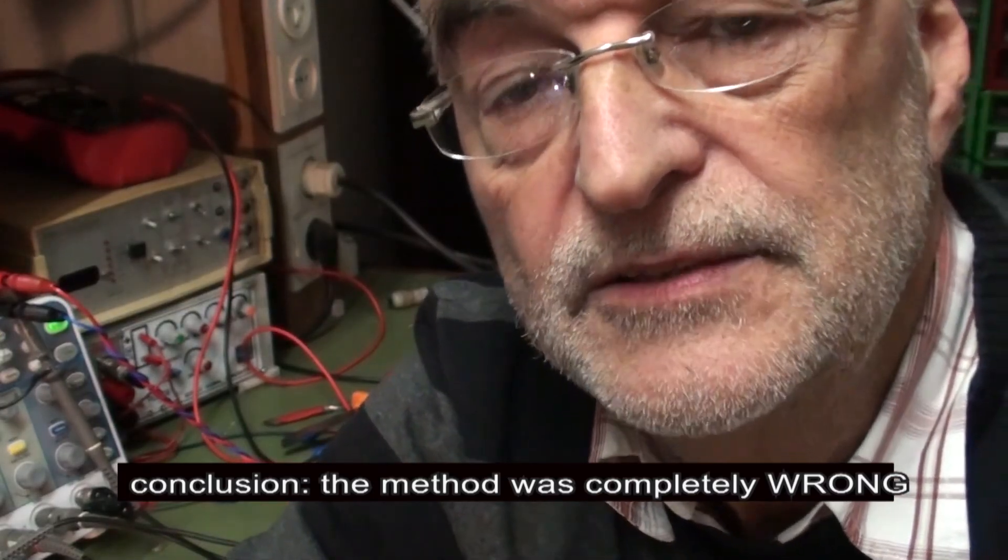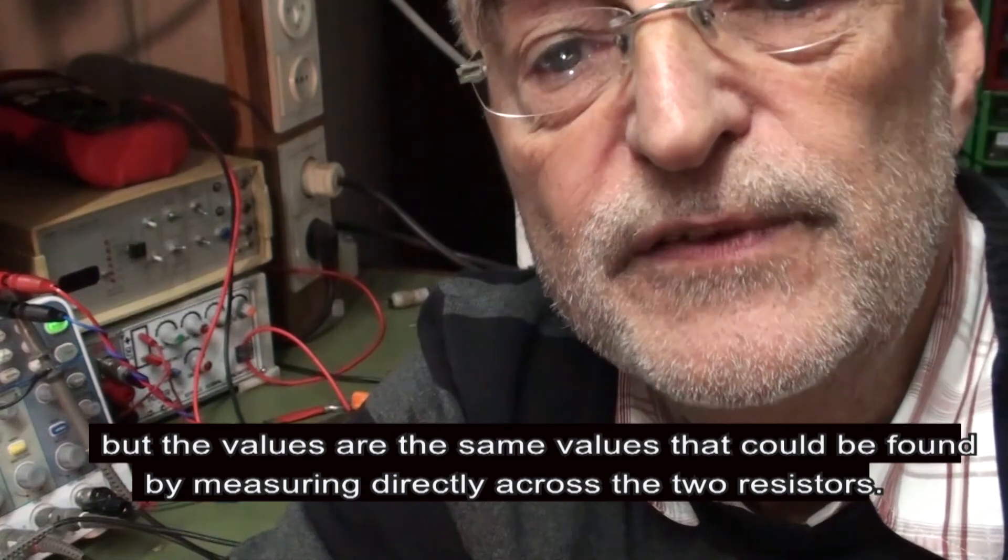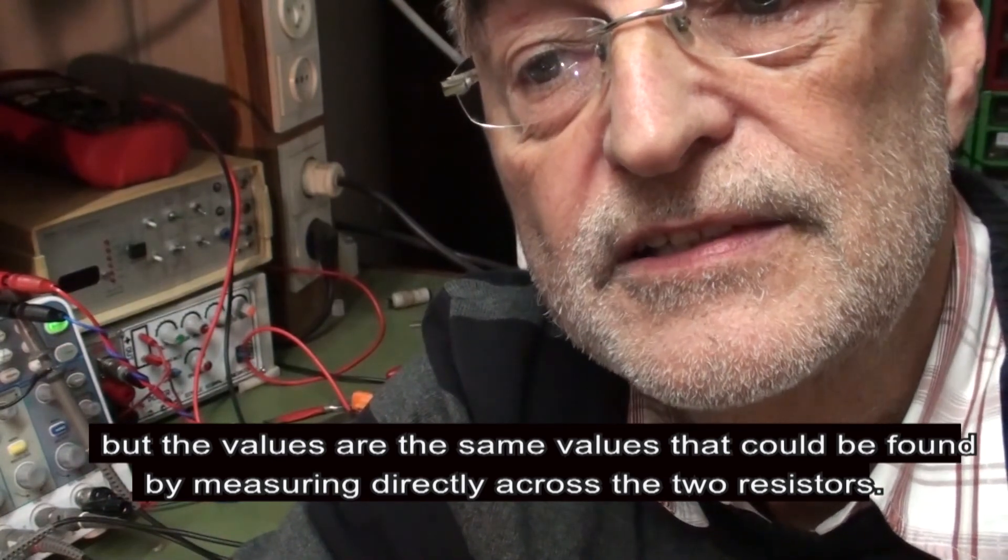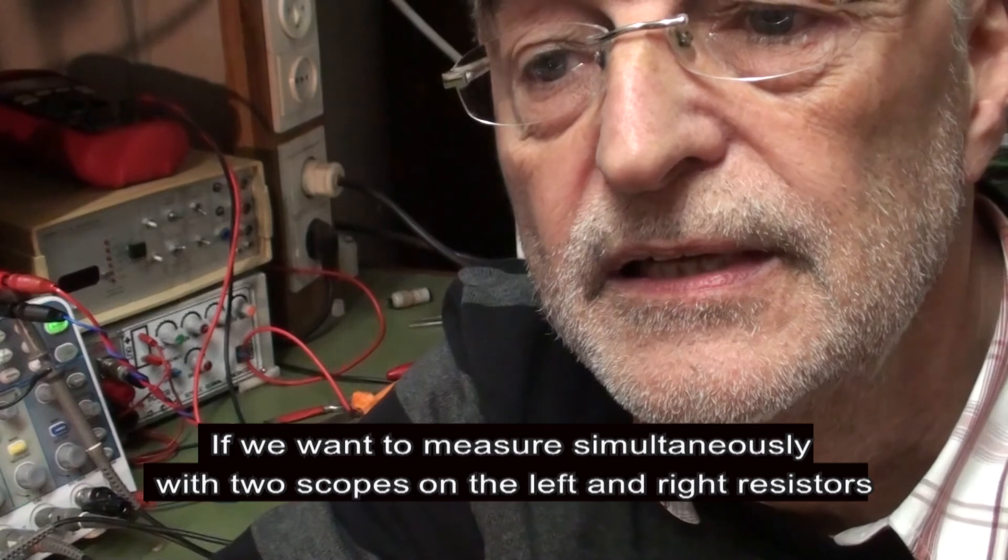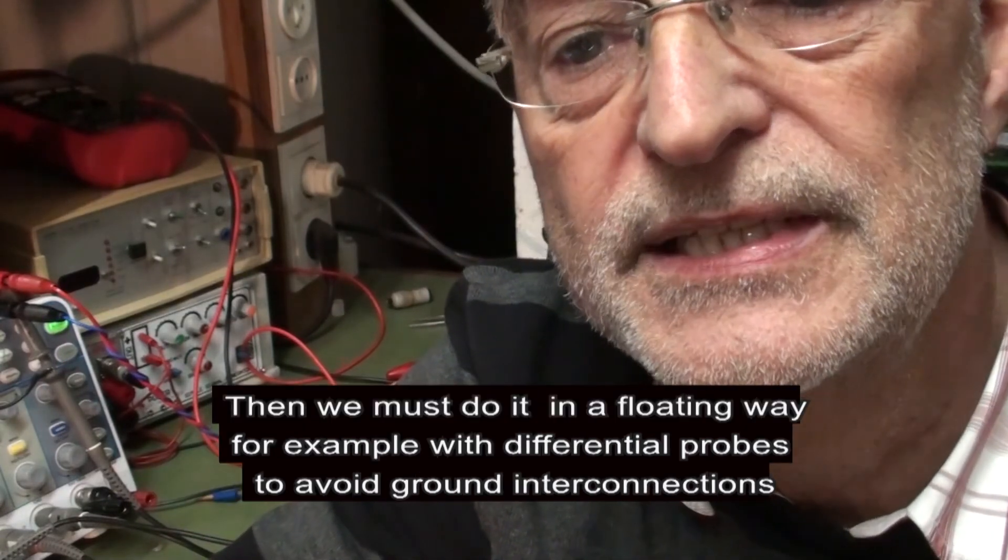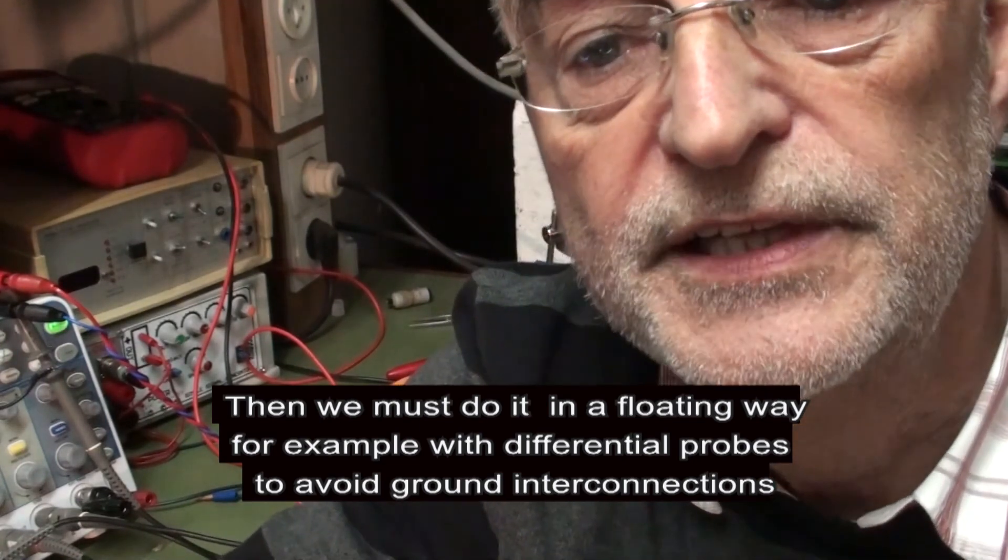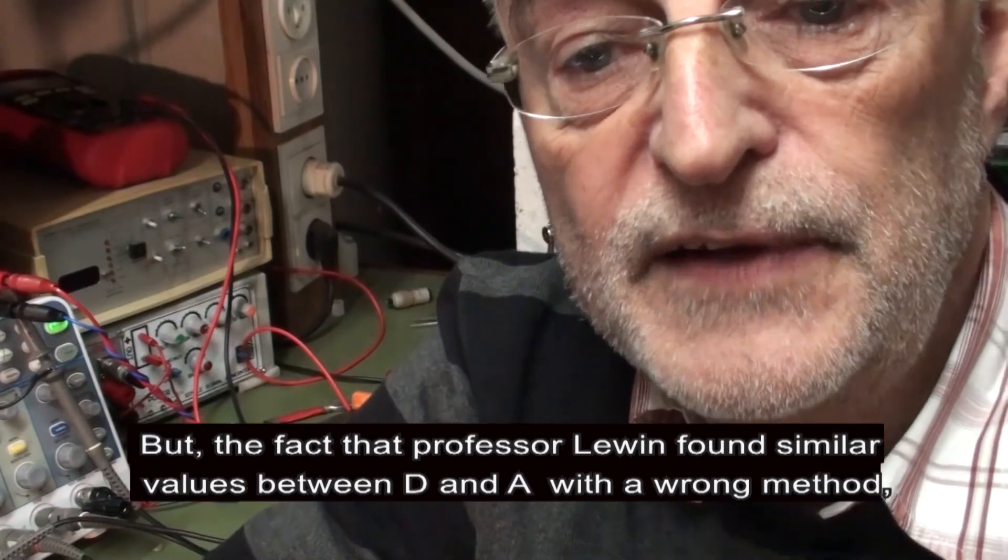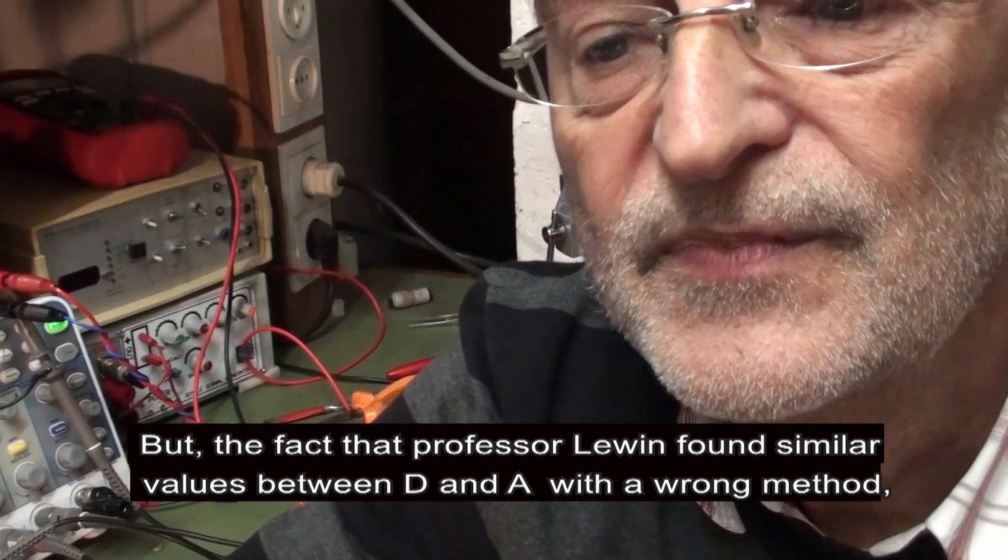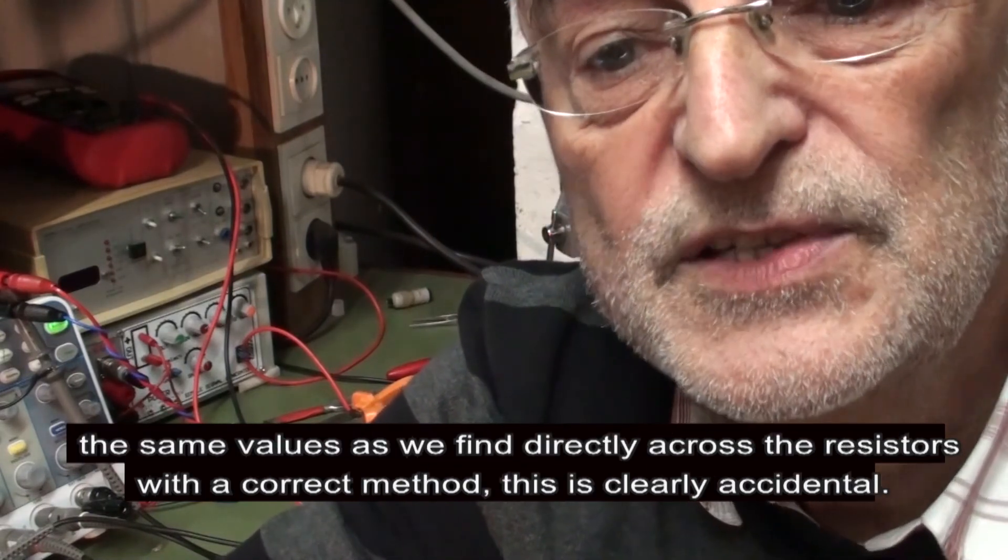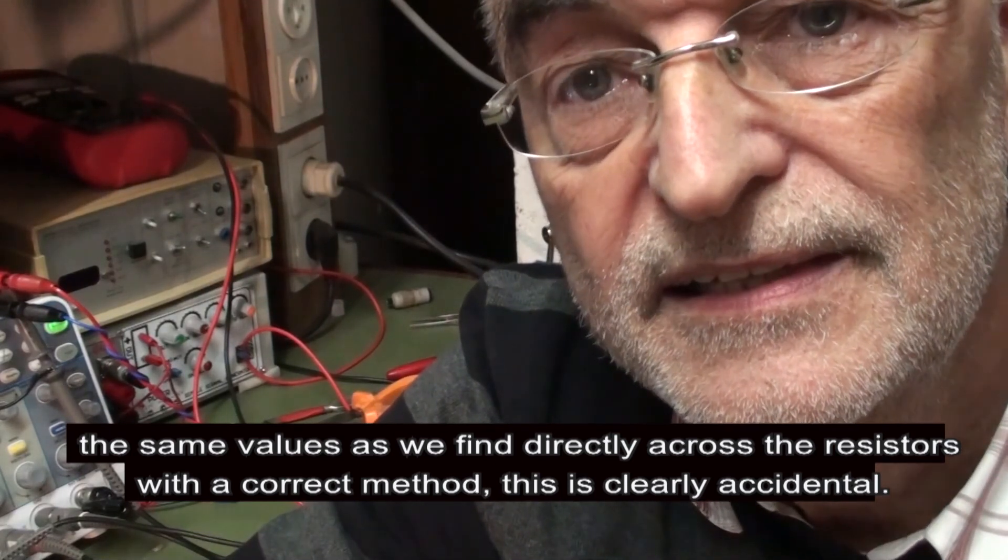Conclusion, the method was completely wrong. But the values are the same values that could be found by measuring directly across the two resistors. If you want to measure simultaneously with two oscilloscopes on the left and right resistors, then we must do it in a floating way, for example with differential probes to avoid ground interconnections. But the fact that Professor Lewin found similar values between D and E with a wrong method, the same values as we can find directly across the resistors with a correct method, this is clearly accidental.